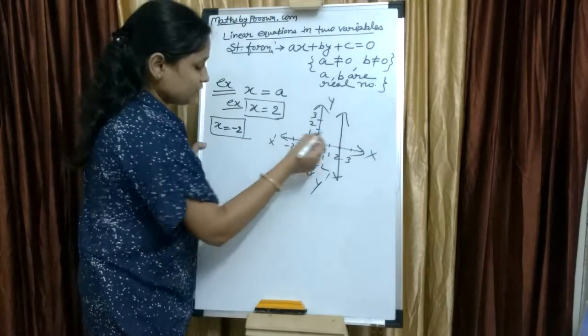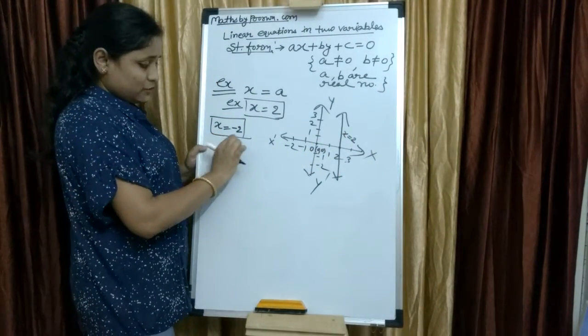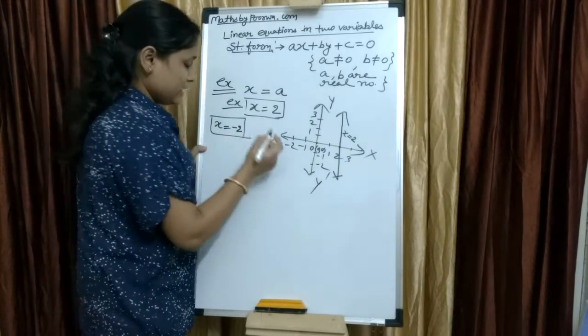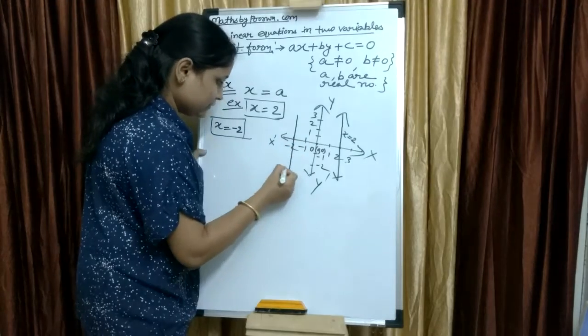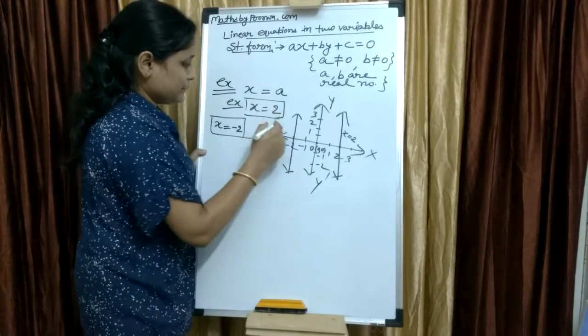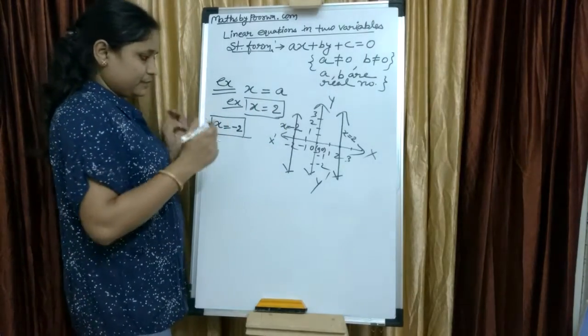If I take another example, x equals to minus 2, then here you write x equals to 2. And if x equals to minus 2, then x equals to minus 2 here. And you have to draw a line like this. This line represents x equals to minus 2.